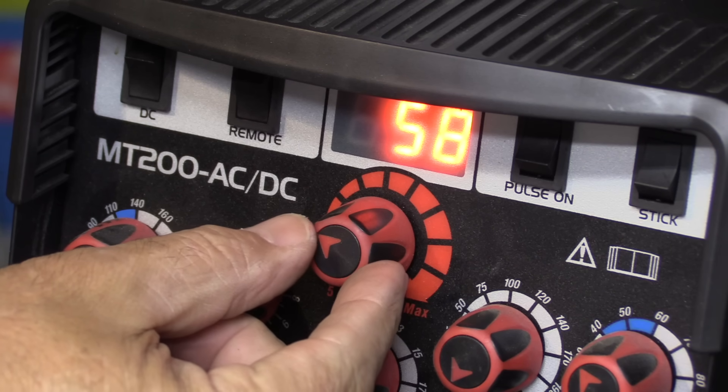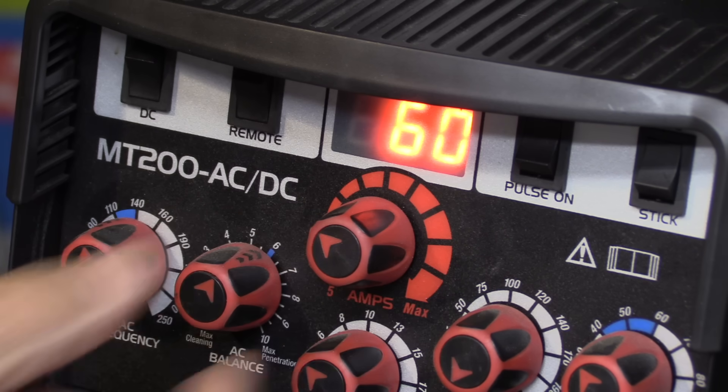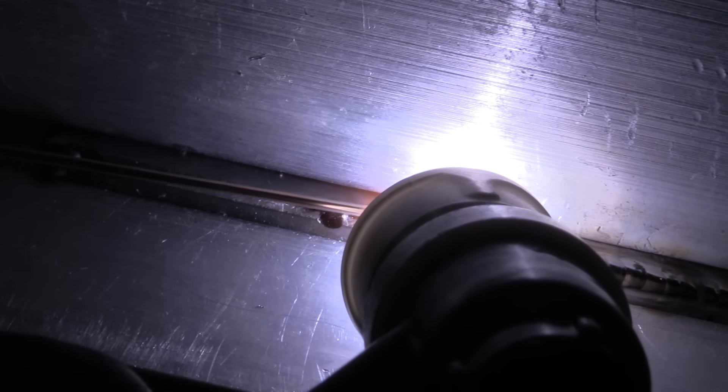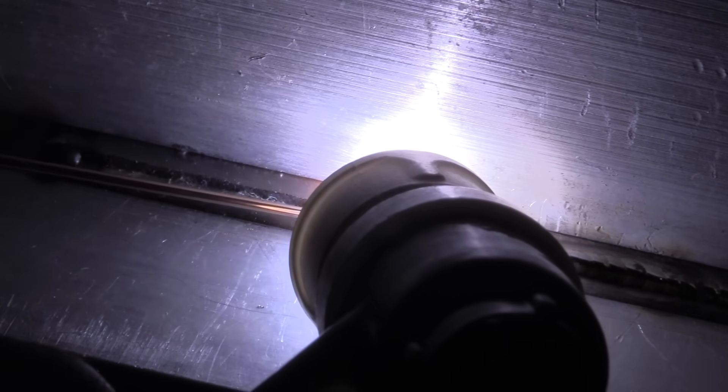I was full pedal at 55 amps and it seemed like I wanted just a little bit more so I'm going to increase it to 60 amps for the rest of this joint. I'm using 045 diameter ER70S2 filler and a 3/32 diameter 2% lanthanated electrode. You saw that earlier on how that was tapered.